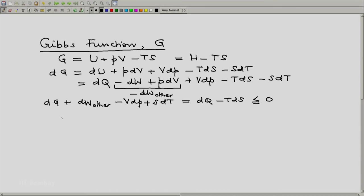And that means if you put dW other on one side, you will get dW other is less than or equal to minus dG plus VdP minus SdT.